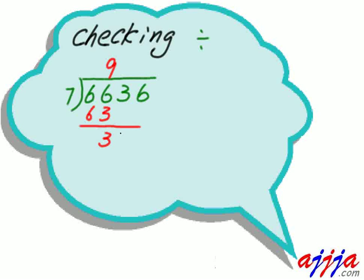3 left. We drop this 3. 33 divided by 7. That's right. 4 times. 4 times 7 is 28. So, 28 right there.